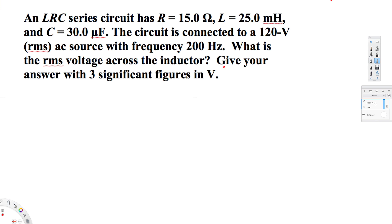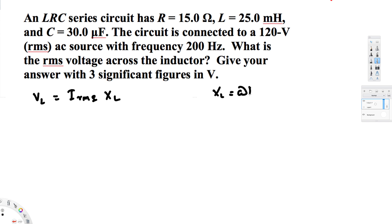To find the RMS voltage across the inductor, we use this equation: VL equals Irms times XL. And we know that XL is given by omega times L. Omega is equal to 2πf — we have the frequency provided — and L is the inductance, which is also provided, so we can find XL.